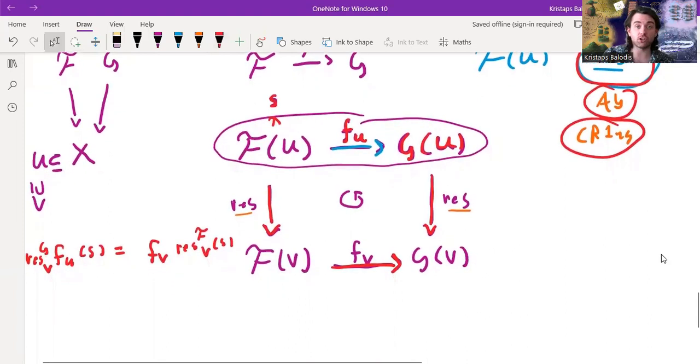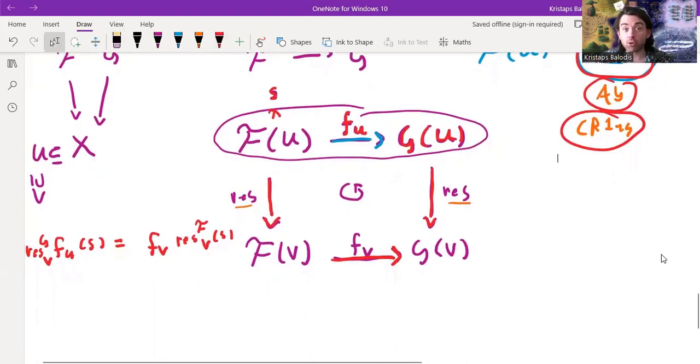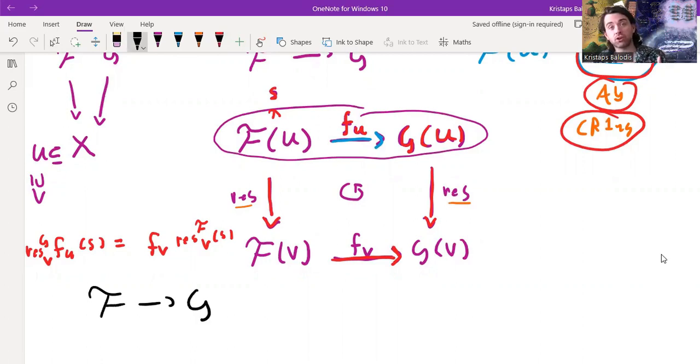That is the definition of a morphism of pre-sheaves, and now we're simply going to define a morphism of sheaves, well remember sheaves are just pre-sheaves plus some extra conditions, so we're simply going to define a morphism of sheaves to be a morphism of pre-sheaves.